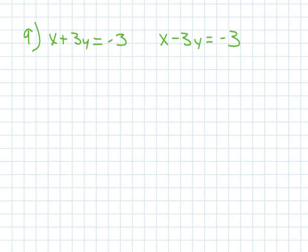Now, for a freebie, I'm going to do one of your problems for you that you have on your assignment. Number 9 says x plus 3y equals negative 3 and x minus 3y equals negative 3. So, here, I'm going to do what I did for the other one. Because they're both in standard form, I'm going to find my x and y intercepts.